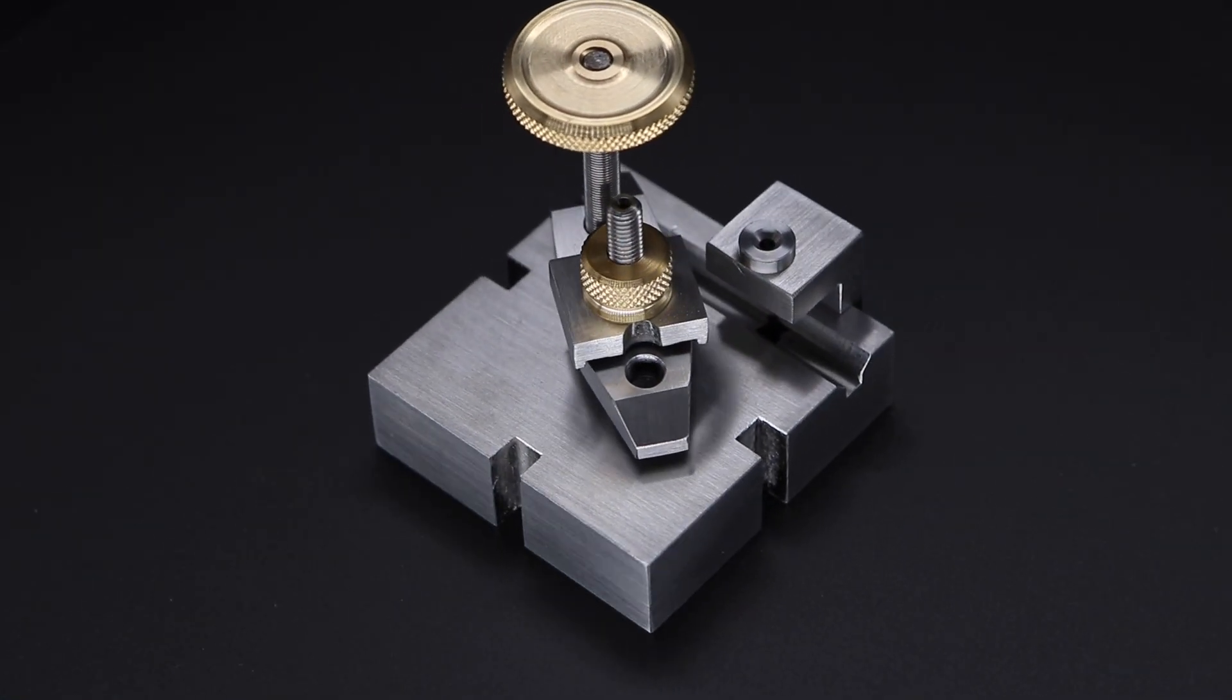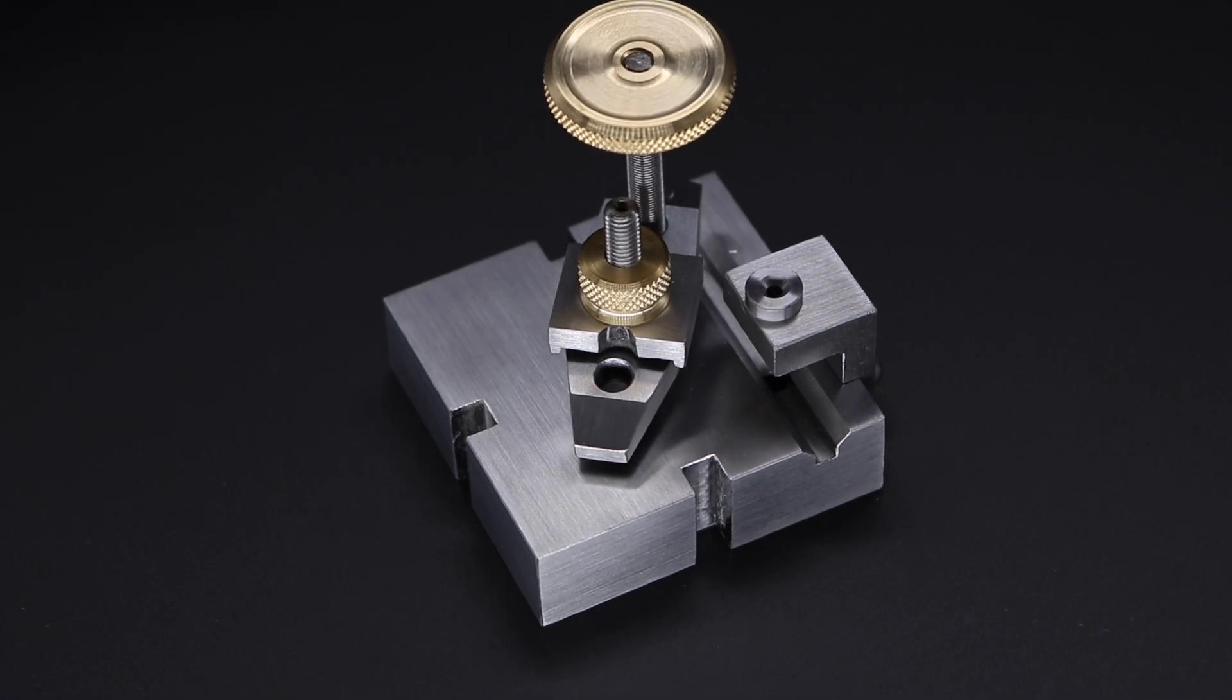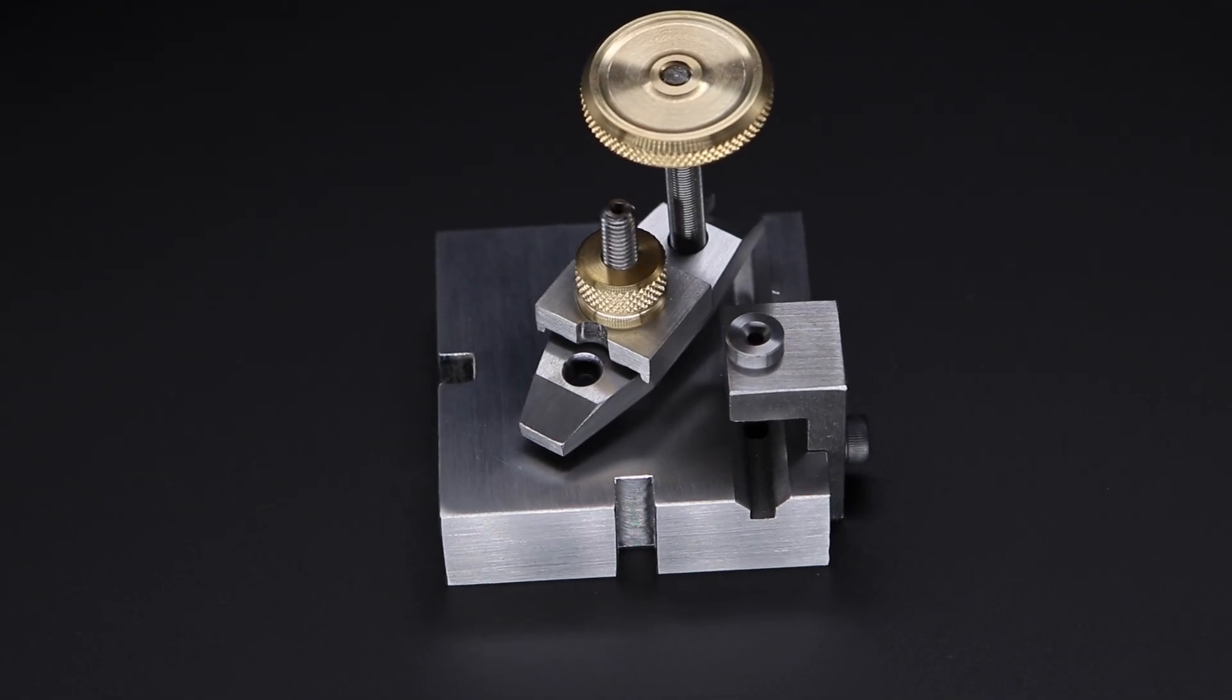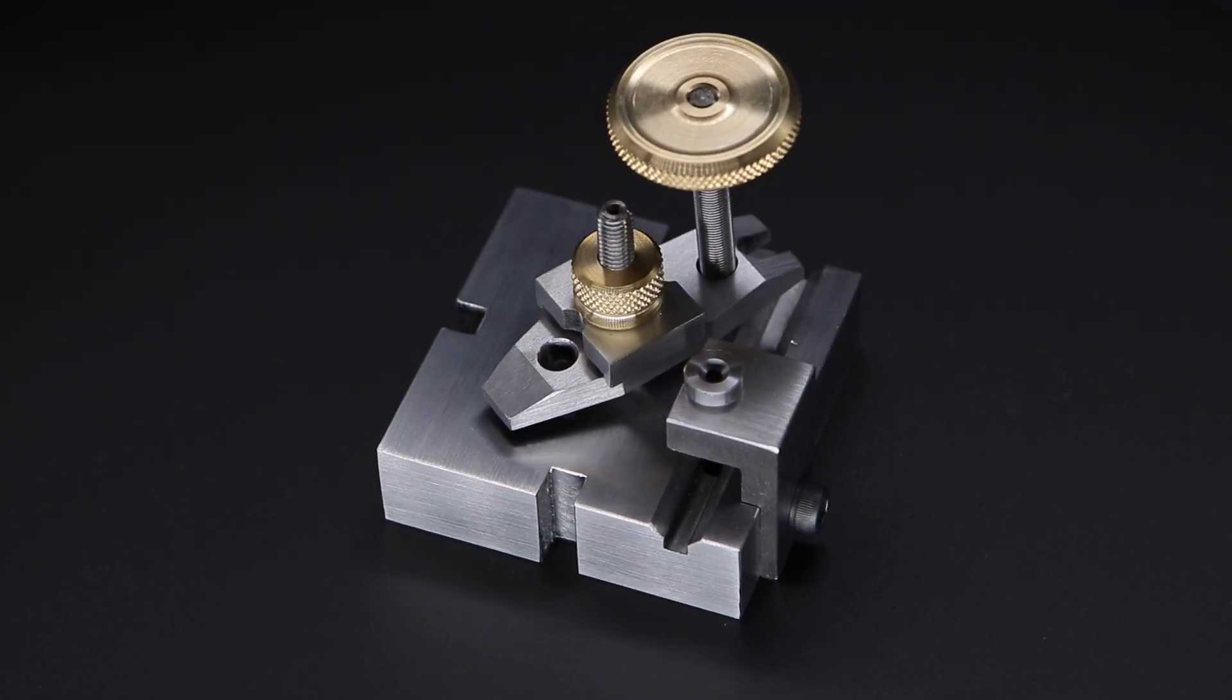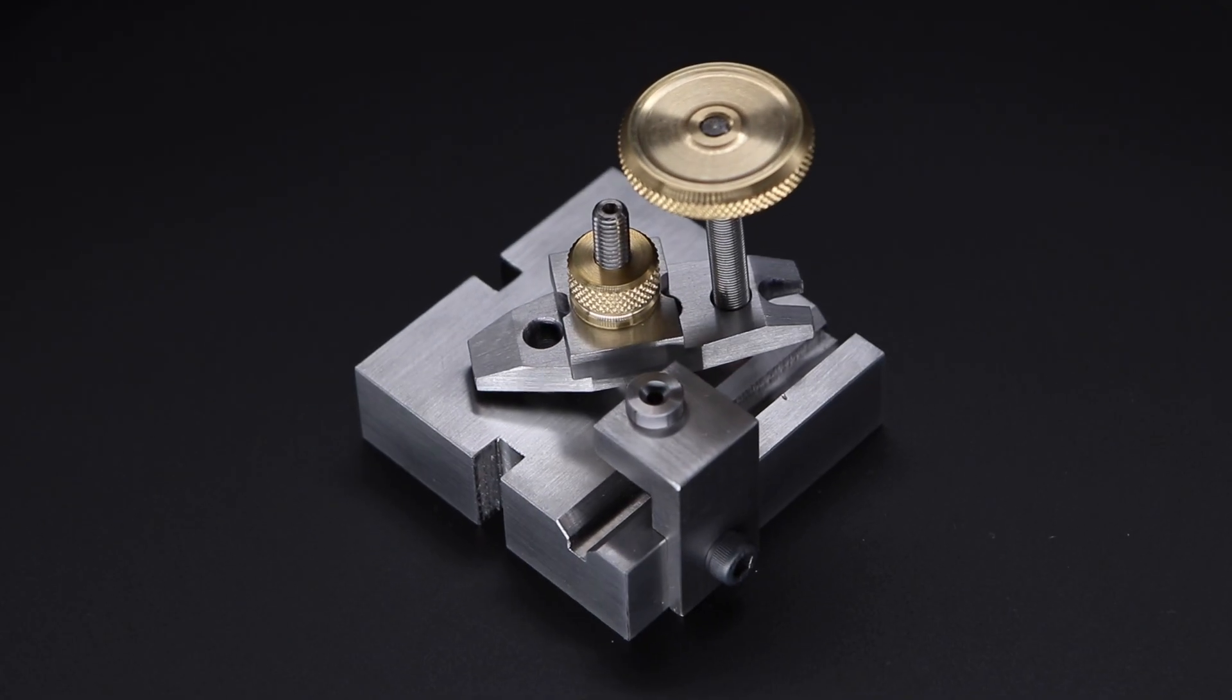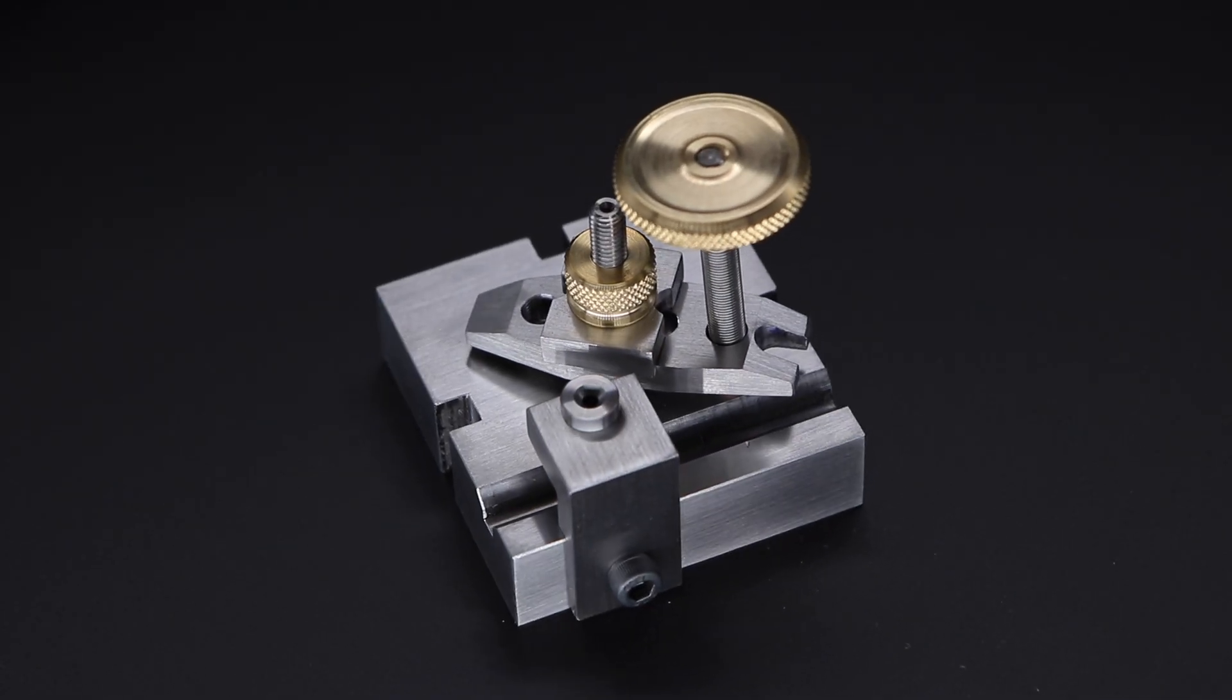The finger plate is essentially a small clamping device and consists of the main plate upon which you place the work, the finger that holds the work, and then the knurled nut and jack screw that tighten the finger down onto the work to secure it to the plate.